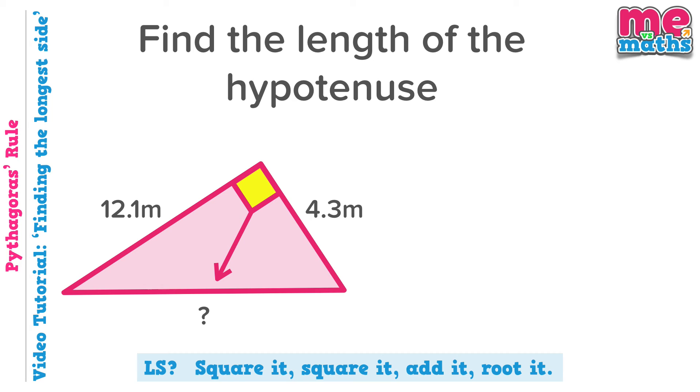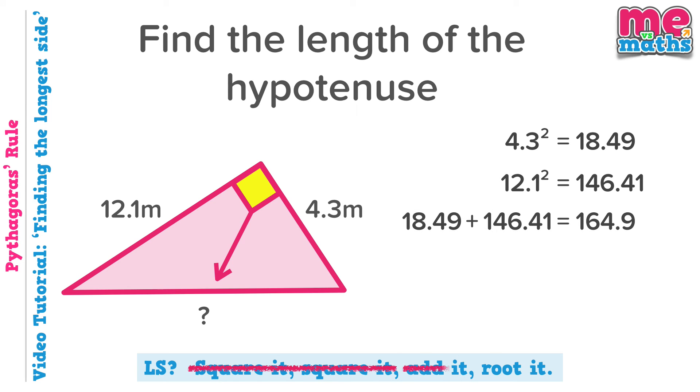Okay, as last time let's square the two sides we're given. Again we need to add these two answers together, and make sure we don't forget the last step, which is to square root this value to get our final answer. Round it off and we get our missing length, which this time is 12.8, make sure the units are right: meters.